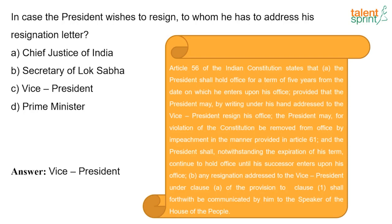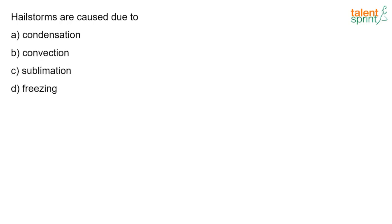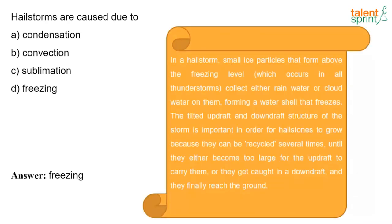Hailstorms are caused due to freezing. In a hailstorm, the small ice particles that form above the freezing level collect either rainwater or cloud water on them, forming a water cell that freezes. The tilted updraft and downdraft structure of the storm is important in order for hailstones to grow, because they can be recycled several times until they become too large for the updraft to carry them or get caught in a downdraft and finally reach the ground.